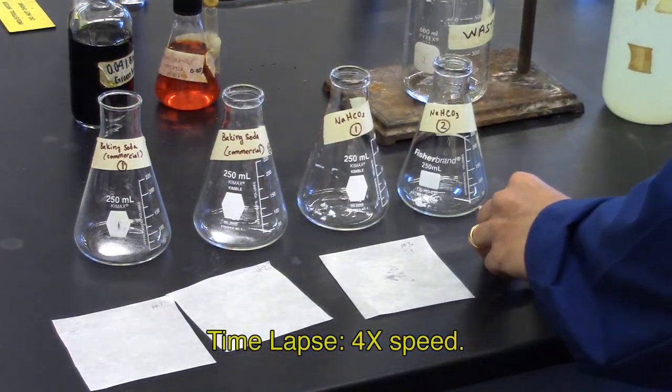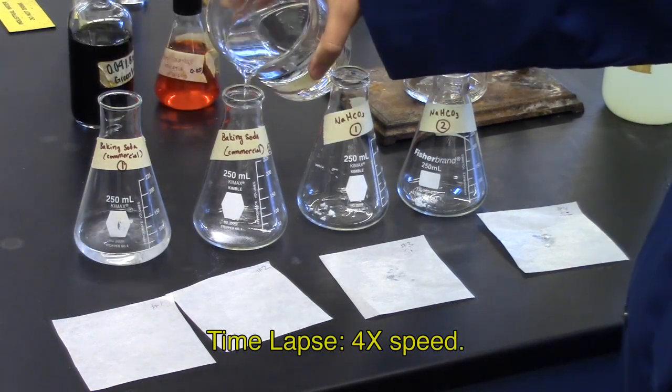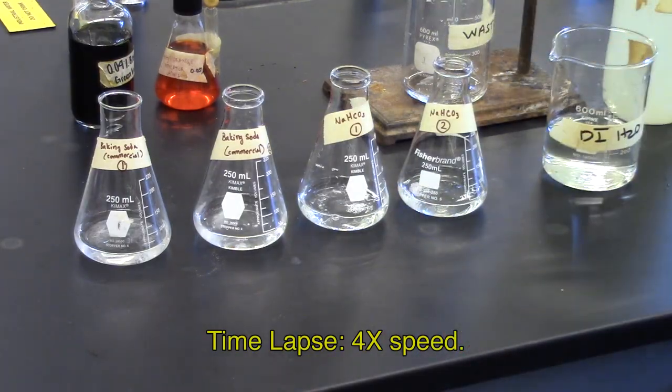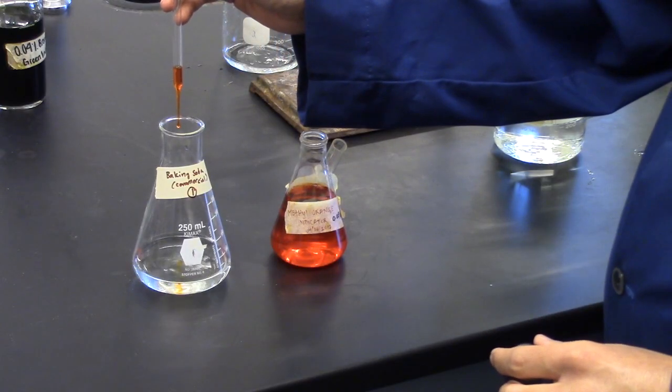To each flask, add approximately 50 milliliters of water. You may use the marks on the flask. To each flask, add three drops of indicator.